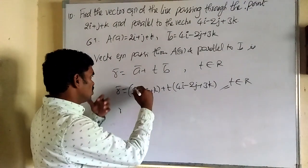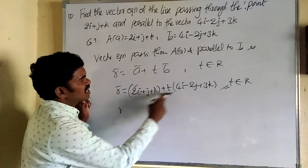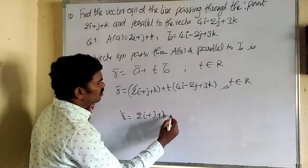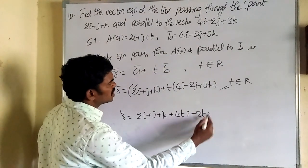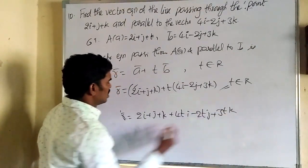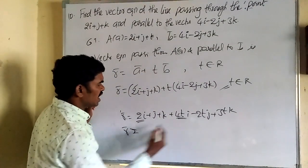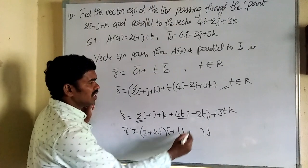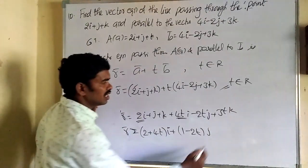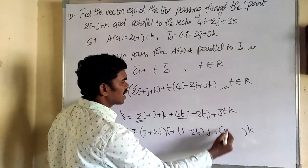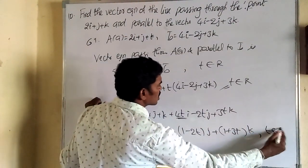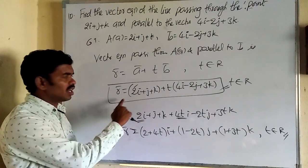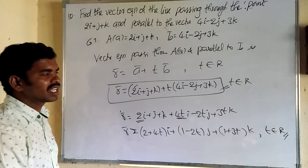Expanding if desired: r̄ = (2 + 4t)i + (1 − 2t)j + (1 + 3t)k, t ∈ ℝ. The answer is r̄ = (2i + j + k) + t(4i − 2j + 3k), t ∈ ℝ.